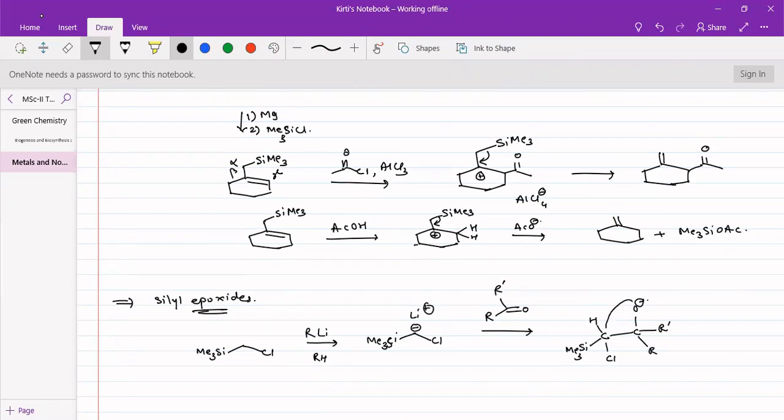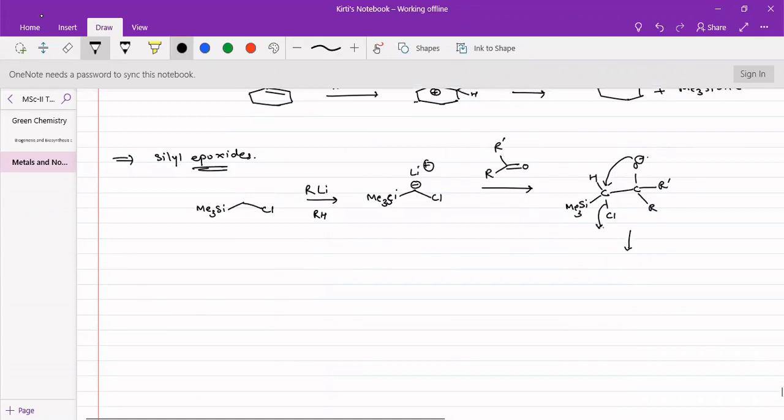So this will be added. Now, this O minus attacks this carbon and there will be loss of, not trimethyl silane, but loss of chlorosilane. And we will get an epoxide. So this epoxide will be generated.